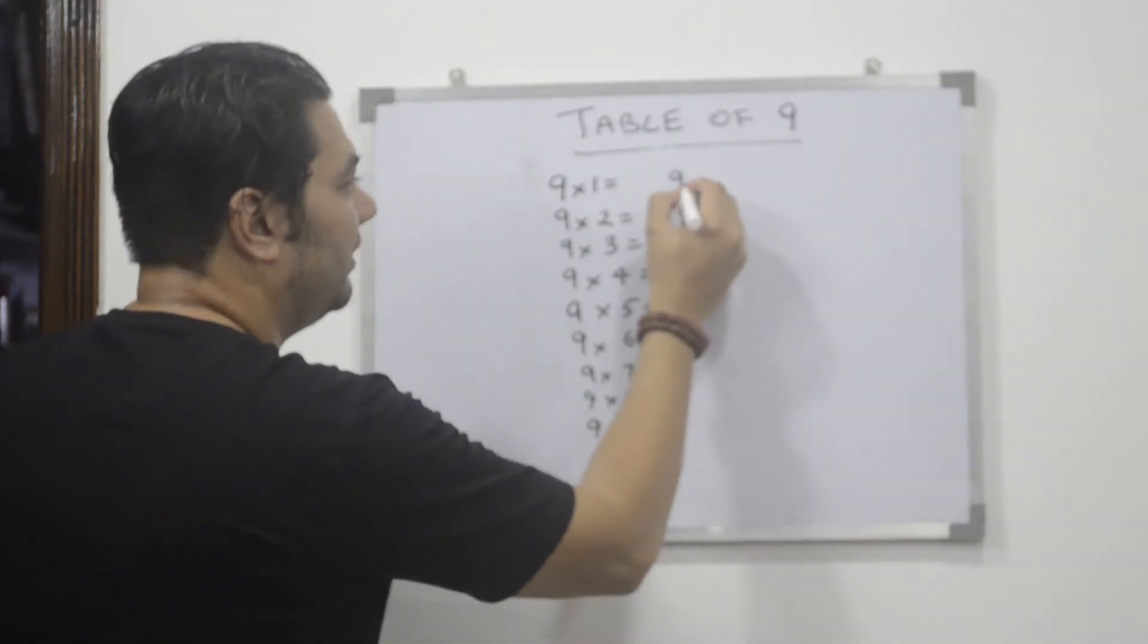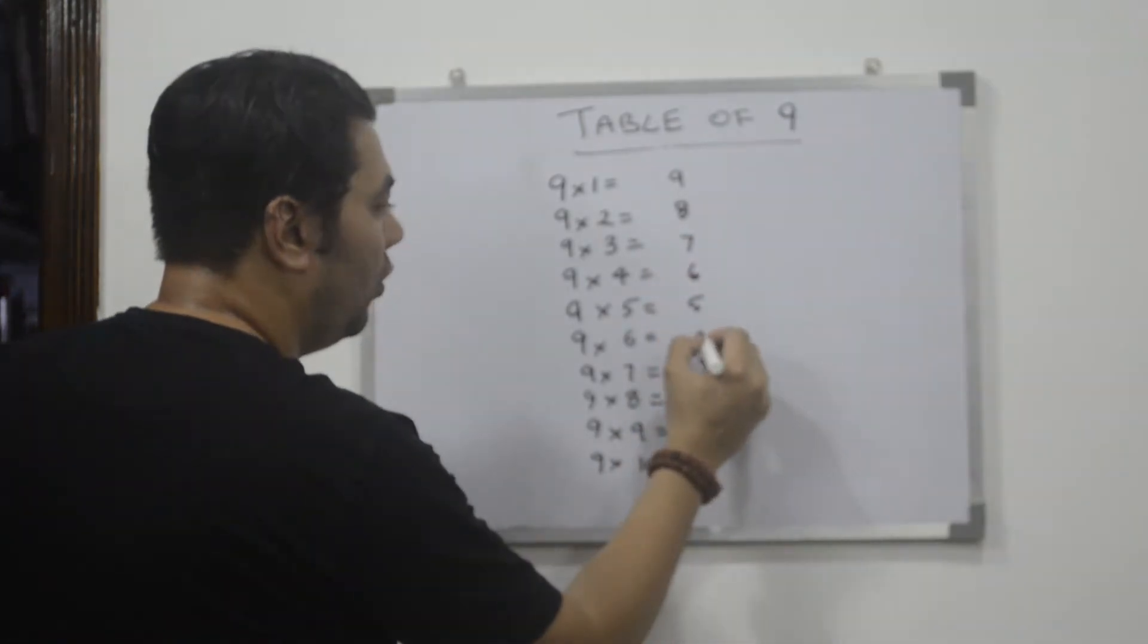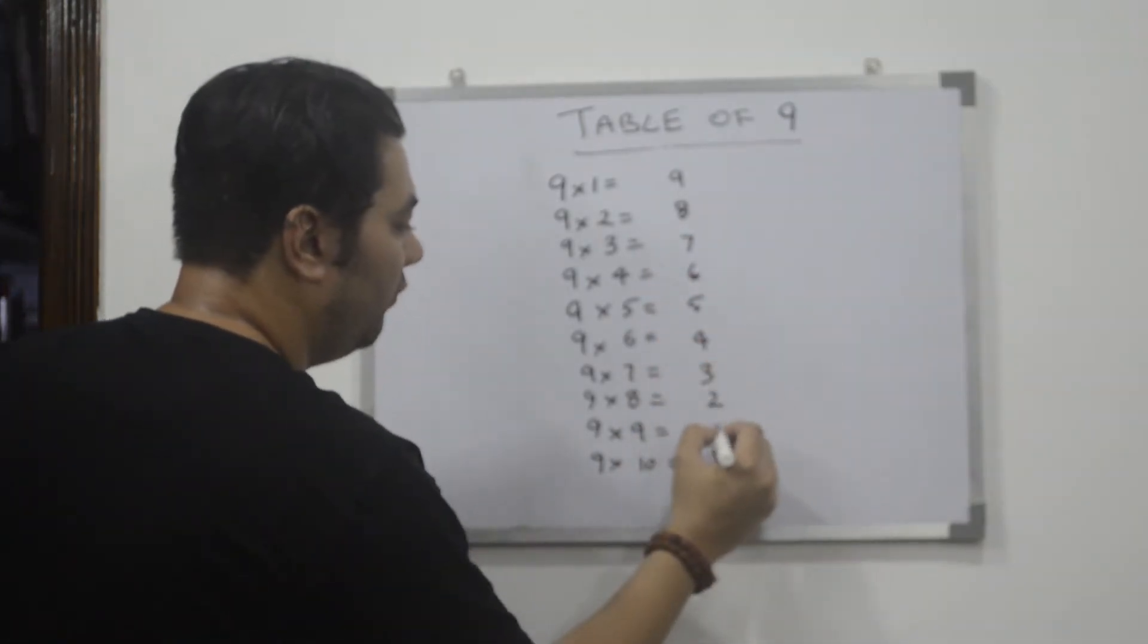Nine to start. Nine, eight, seven, six, five, four, three, two, one, zero.